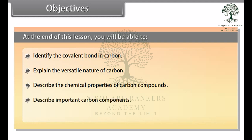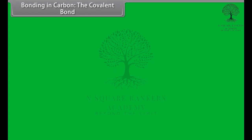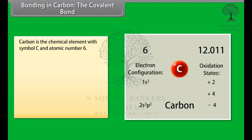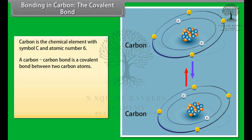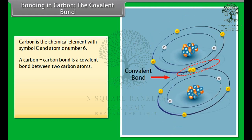Bonding in carbon. Carbon is the chemical element with symbol C and atomic number 6. As a member of group 14 on the periodic table, it is non-metallic with 4 electrons available to form covalent chemical bonds. A carbon-carbon bond is a covalent bond between two carbon atoms. The most common form is the single bond, a bond composed of two electrons, one from each of the two atoms.